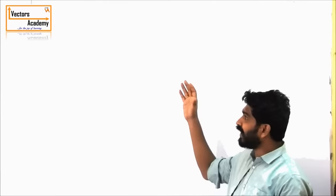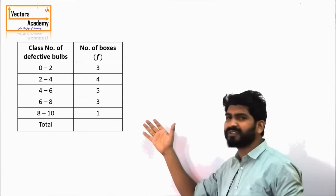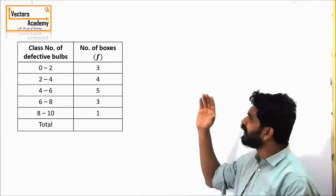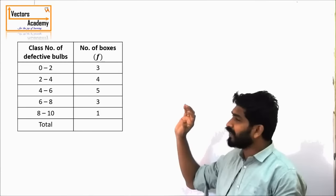Let us have a look at this example. This data represents the number of defective bulbs and the number of boxes which have that same number of defective bulbs. For example, there are 0 to 2 defective bulbs in 3 boxes, and 2 to 4 defective bulbs in 4 boxes, and so on.